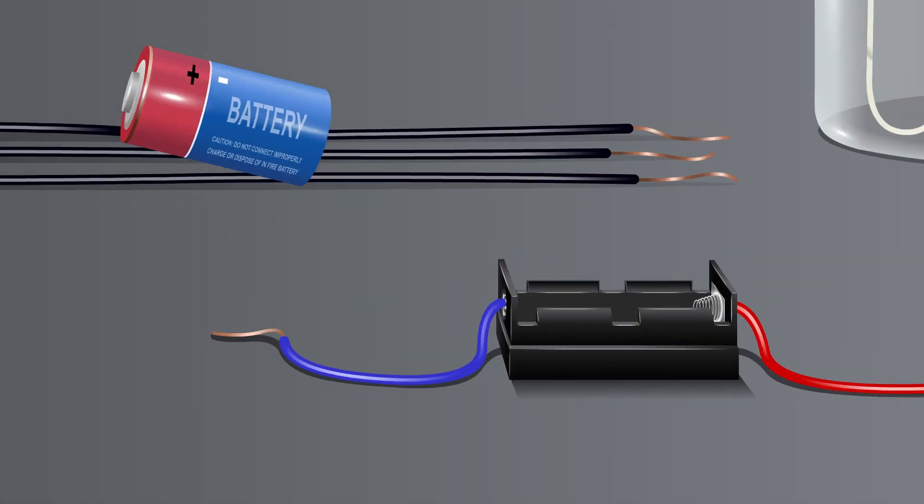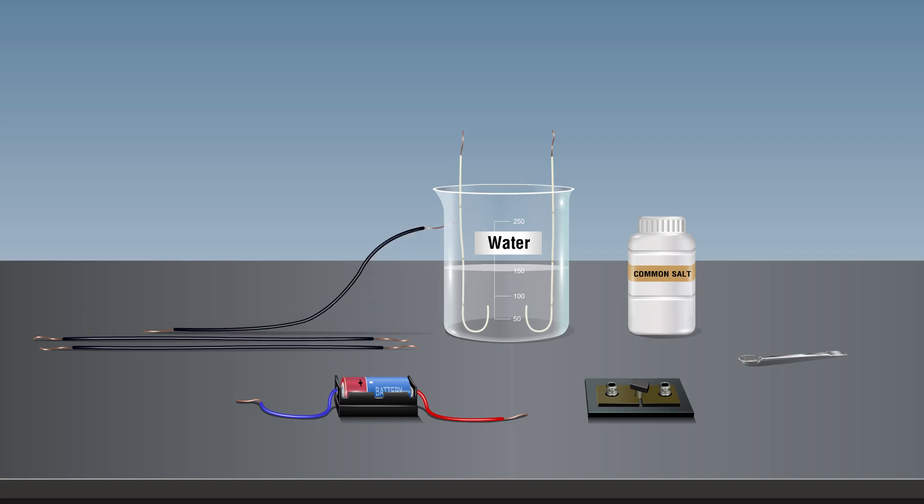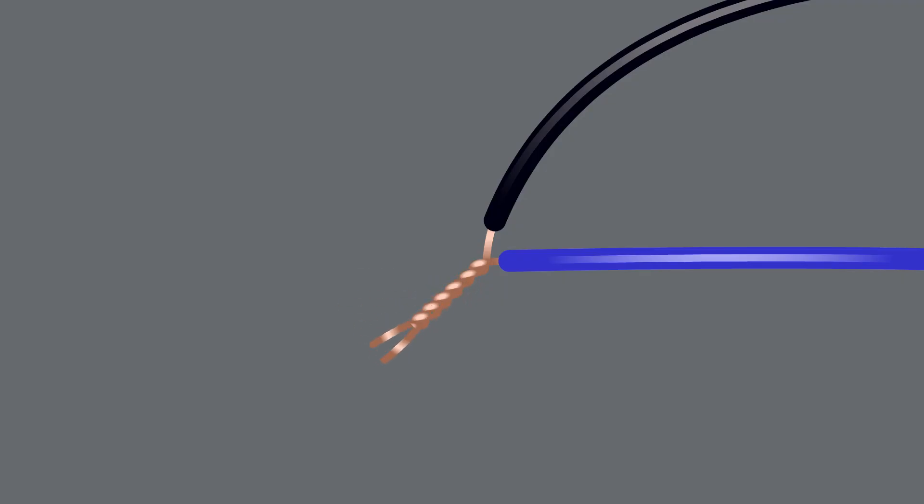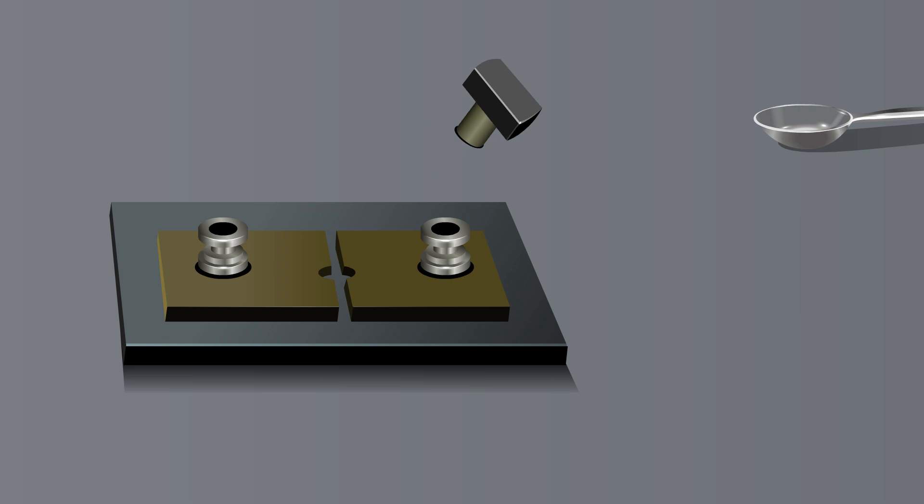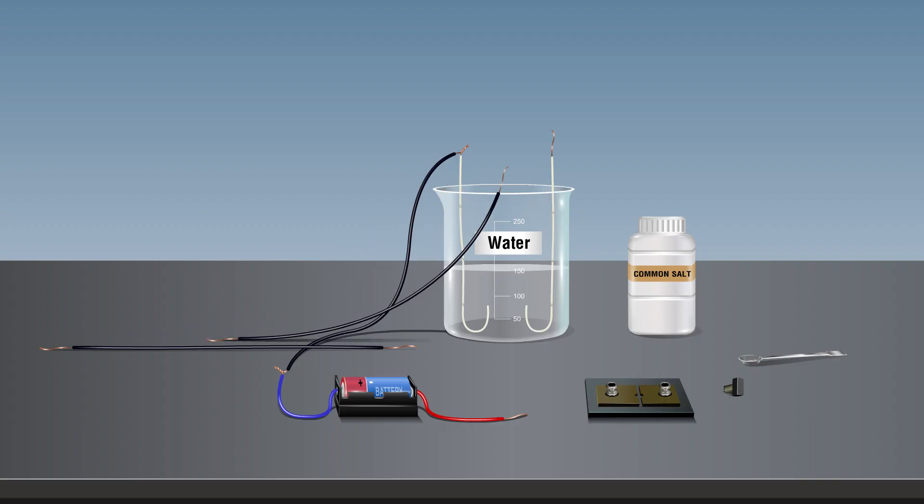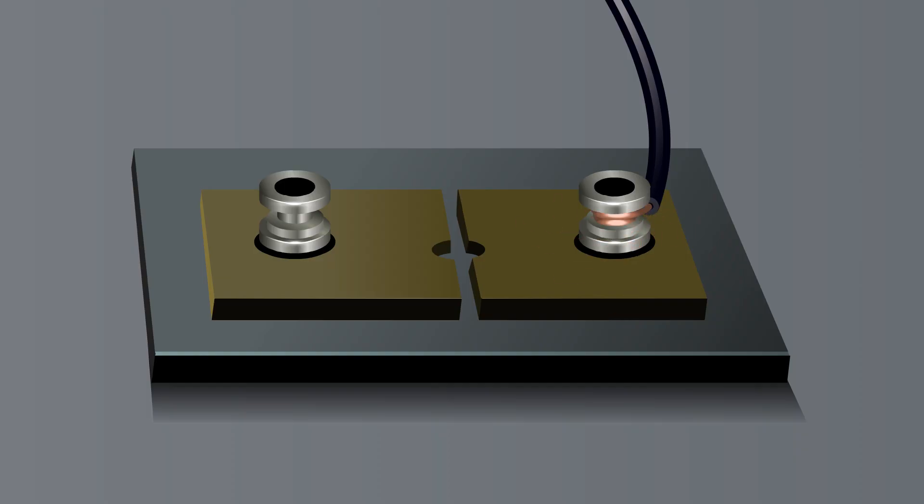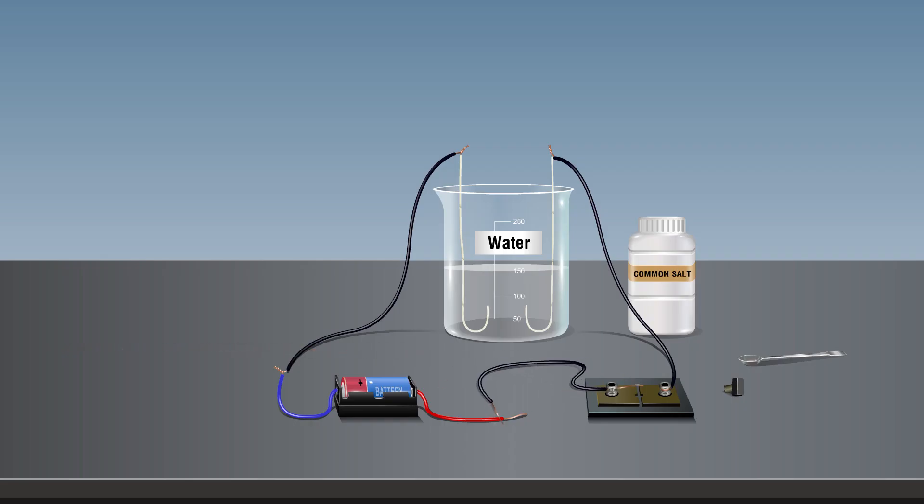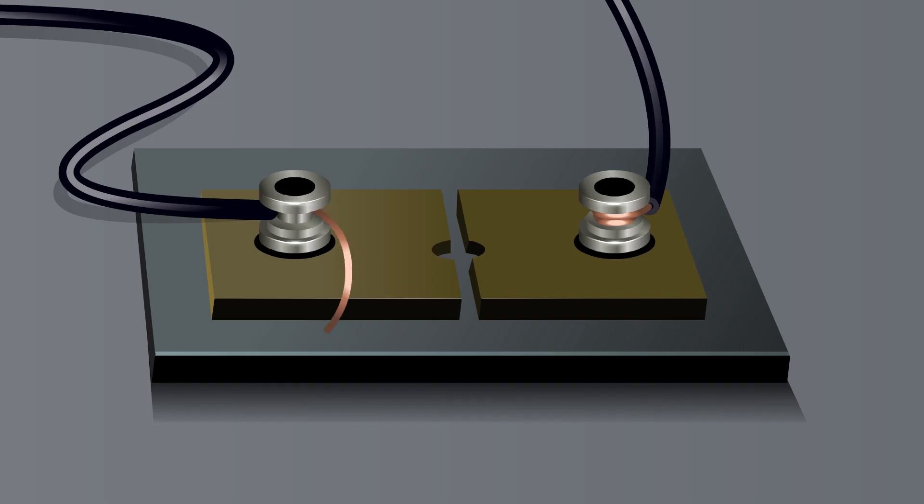Connect its other end to the positive terminal of the battery. Connect the second U-shaped connecting wire to the negative terminal of the cell through the key. Connect the negative terminal of the battery to a plug key.